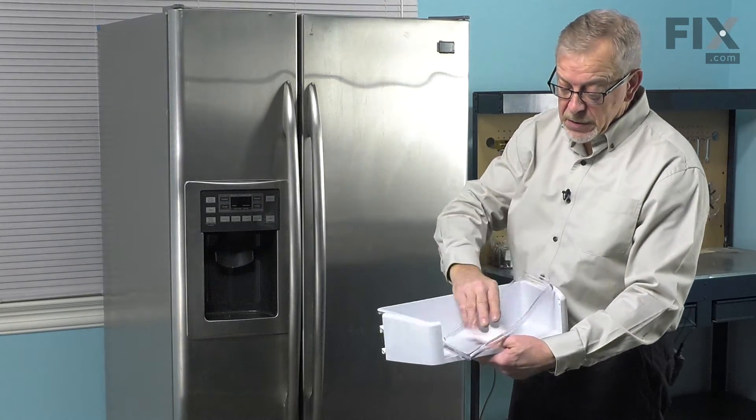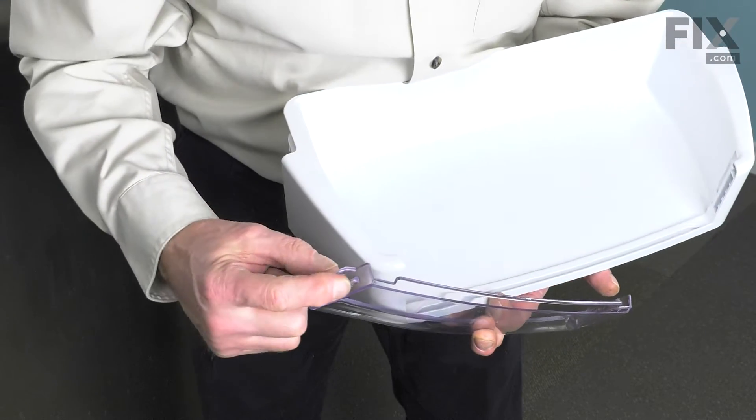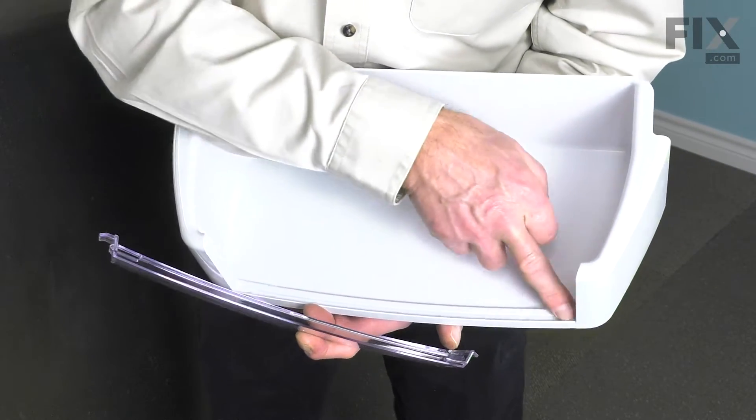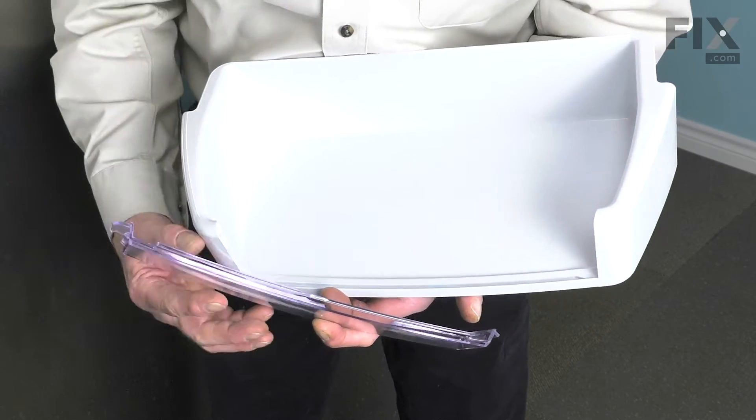We'll take our new insert. You'll note that there's a rib across the bottom and there's one on each side, and they will fit correspondingly into the bottom of the shelf and these two spots on the side.